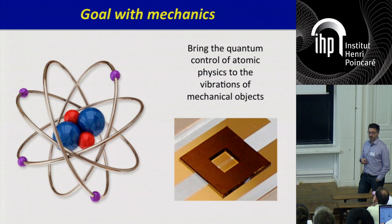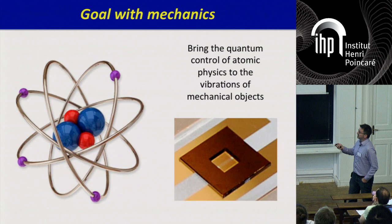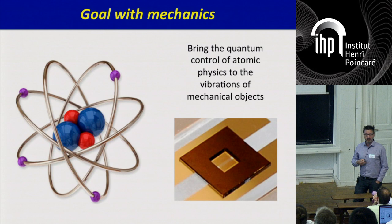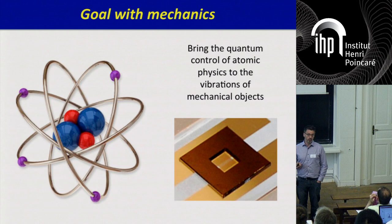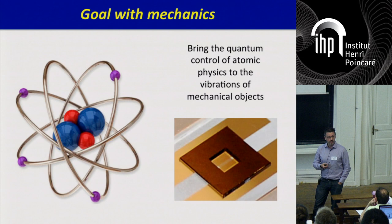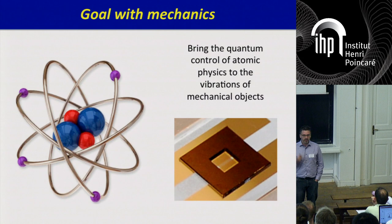One of the goals in the main focus of my group is to bring the control that people have of the quantum state of artificial atoms or real atoms to macroscopic vibrating objects. The first motivation is that the silicon nitride membrane we work with can have extremely long coherence times — on the order of 100 milliseconds right now — and current technological developments suggest thermal decoherence times on the order of 10 seconds or longer are possible soon.